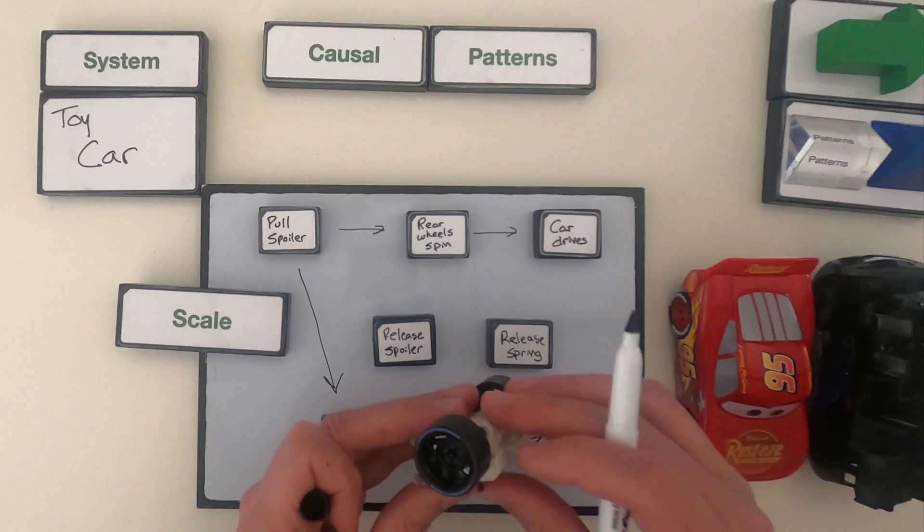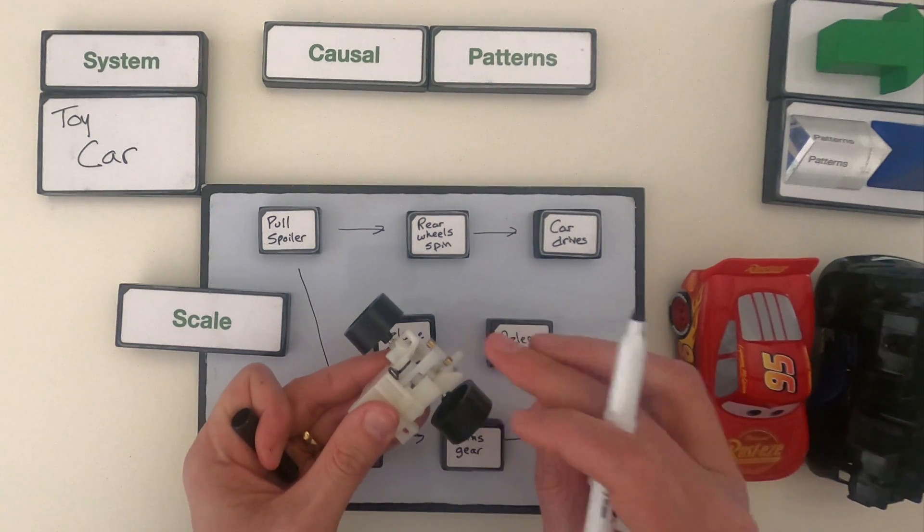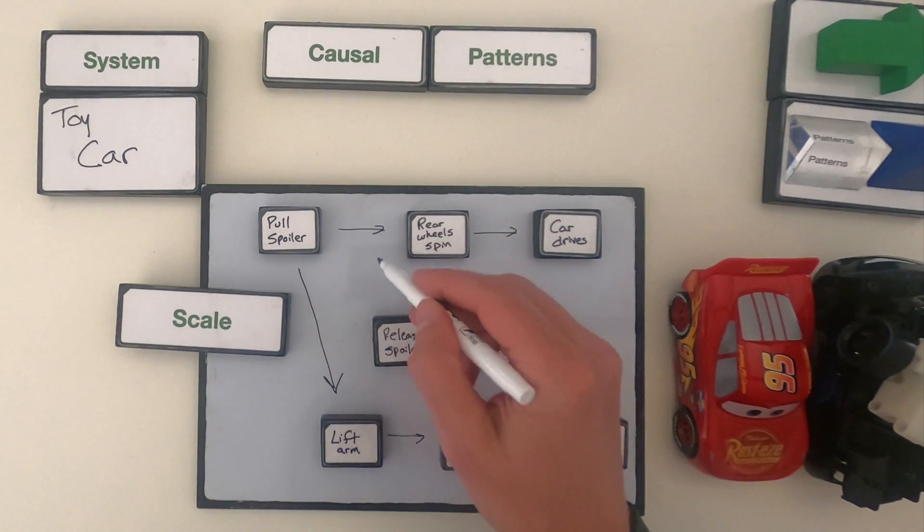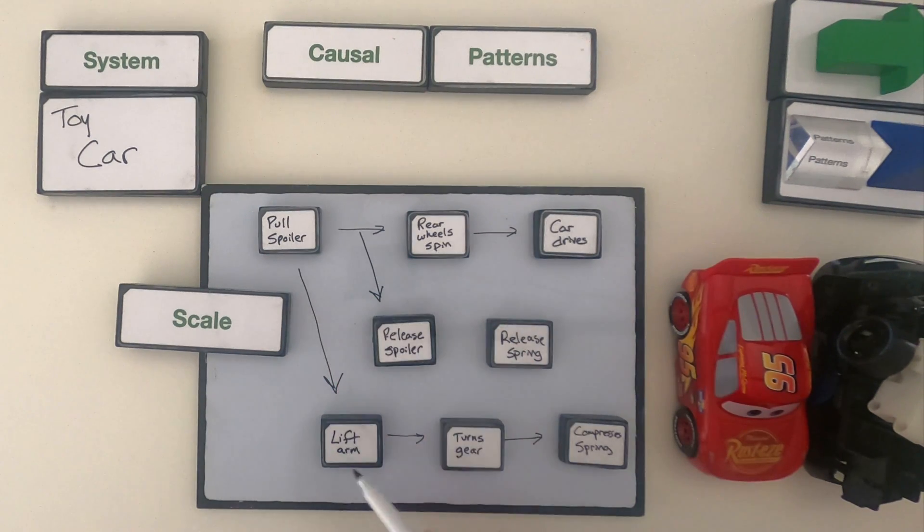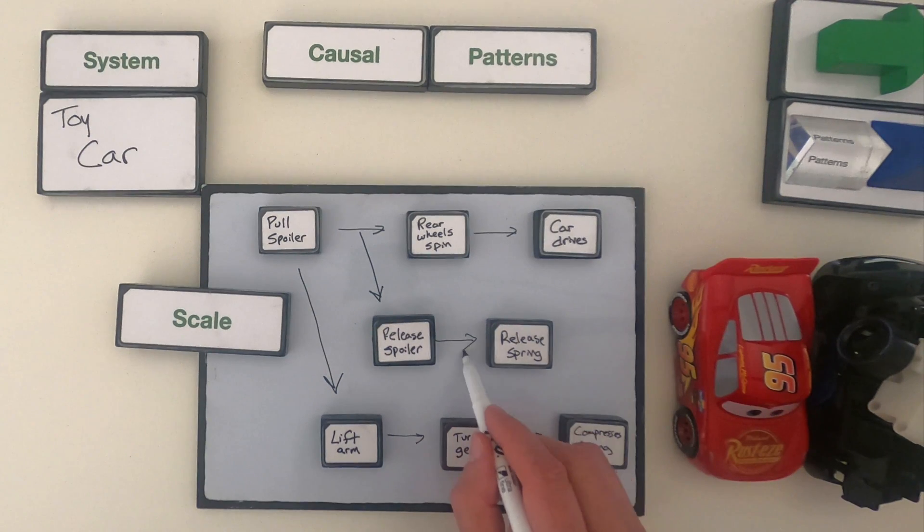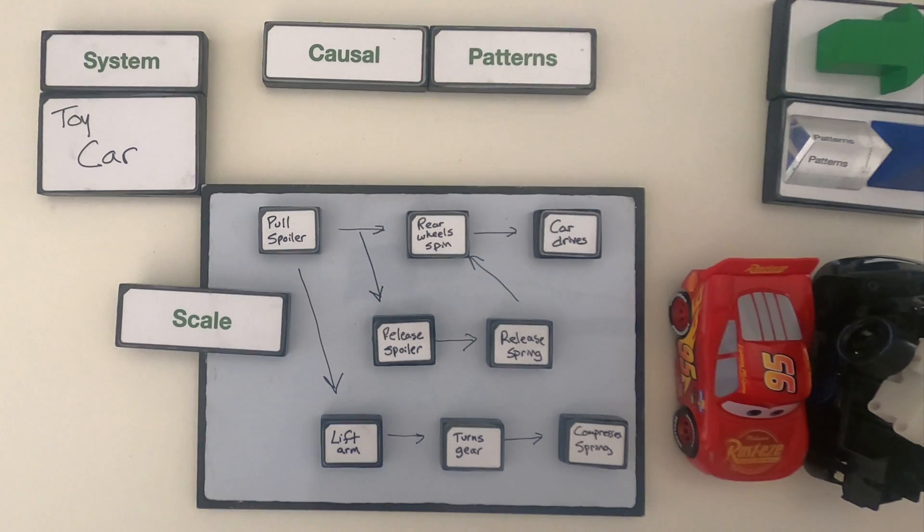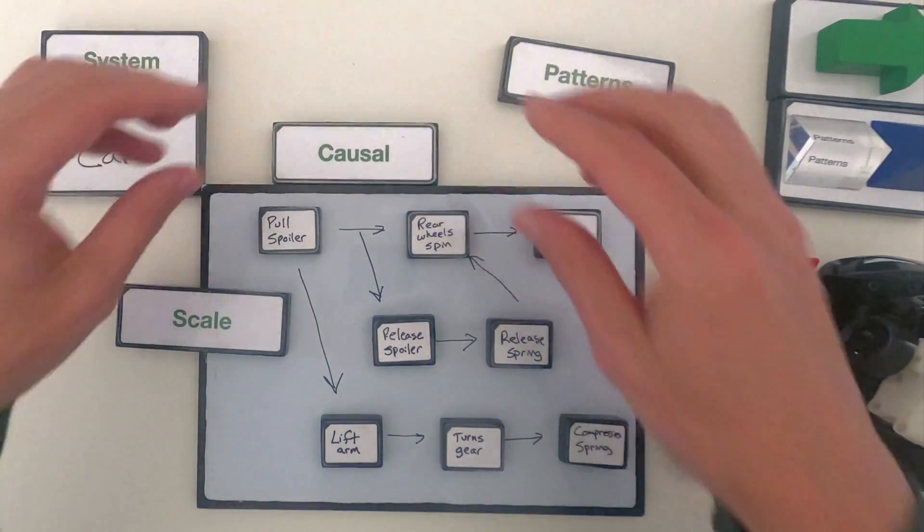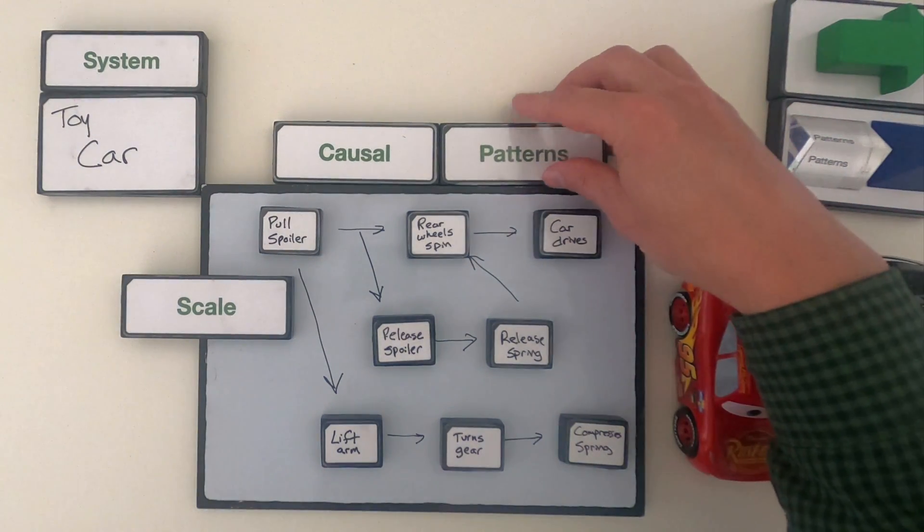The other thing that I thought was interesting is when you actually let go of the spoiler, then that arm hits this part and lets it go. So you pull the spoiler and it does one thing, but when you release the spoiler, that releases the spring and that causes the rear wheels to spin and then the car to drive. And so we've identified not only the causal patterns but we've started to identify what are the causal patterns at scale.